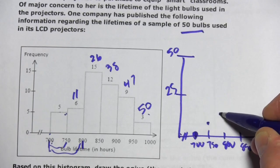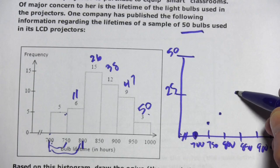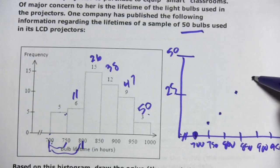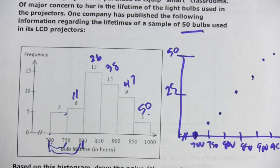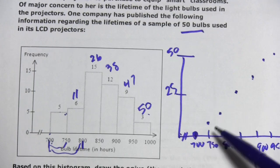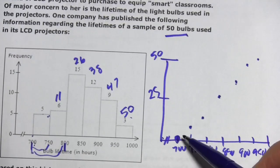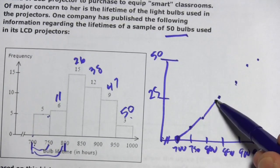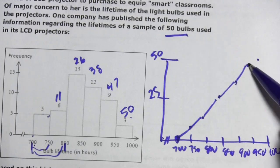And 11, and then 26, and then 38, and then 47, and then 50. And then all we have to do is connect the dots to get our cumulative frequency polygon, or ogive.